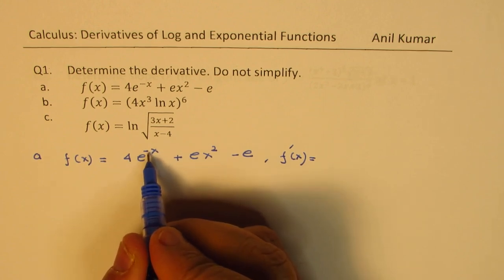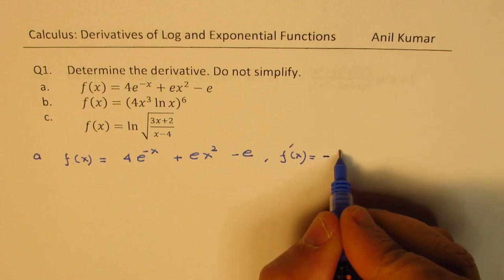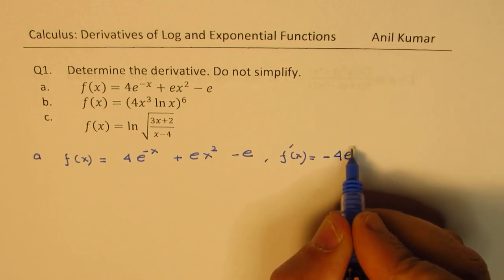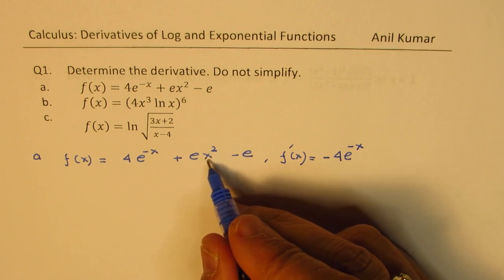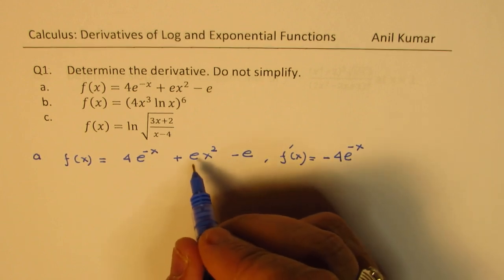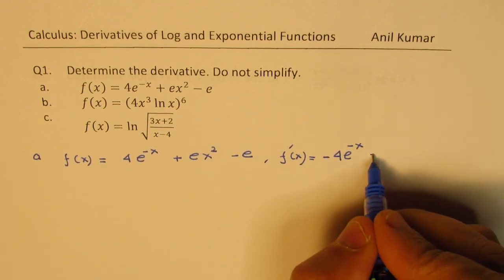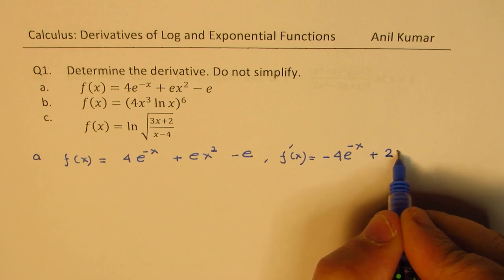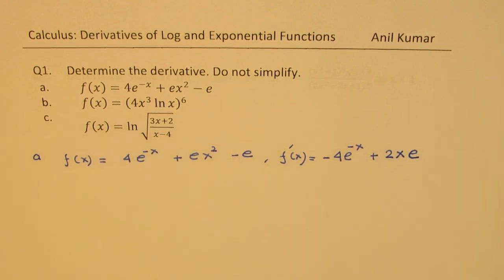The derivative of e to the power of minus x is minus e to the power of minus x. So you get minus 4e to the power of minus x, and here we get 2 times x. E is a constant, so we get plus 2 times x times e. Minus e is a constant itself and therefore its derivative is 0. So that becomes the result for the derivative.